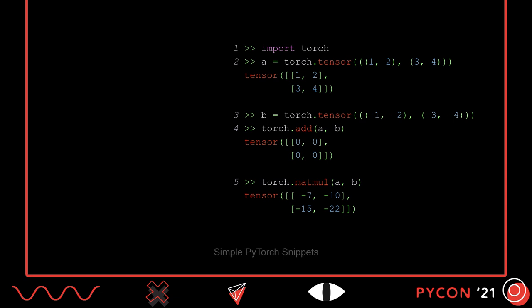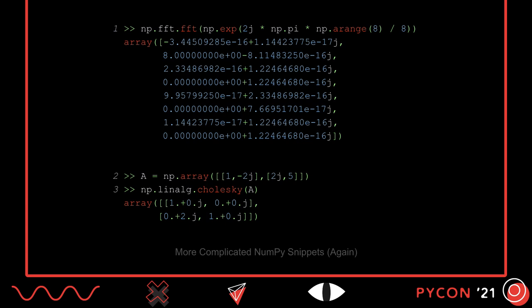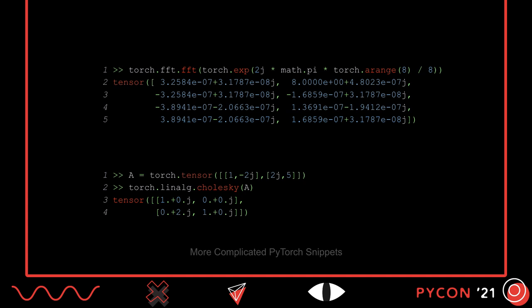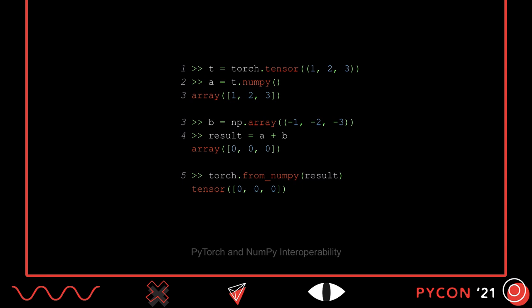That suggests that PyTorch and NumPy are basically equivalent for simple programs, but what about more complicated examples? Well, here's our complicated NumPy snippets, and here's the same snippets in PyTorch. We can actually see that printing prints a few less digits in PyTorch by default, but that's actually customizable. Otherwise, we have the same operations. PyTorch and NumPy tensors can actually be converted between the two frameworks, as shown here, where a PyTorch tensor is passed to NumPy, added with a NumPy tensor, and then the result is translated back to PyTorch.